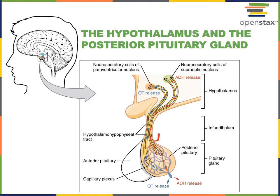These neurosecretory cells are neurons that release hormones called neurohormones. Oxytocin and antidiuretic hormone are examples of neurohormones that are released from the posterior pituitary gland by the neurosecretory cells of the hypothalamus.